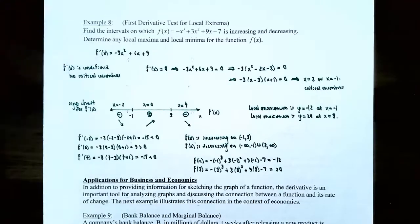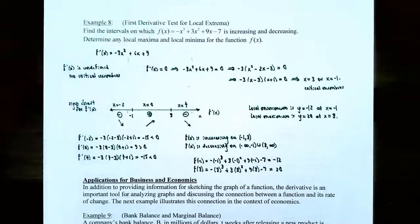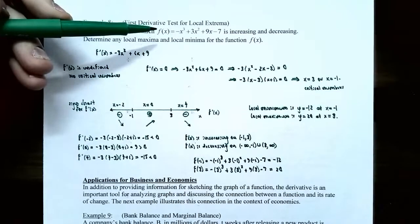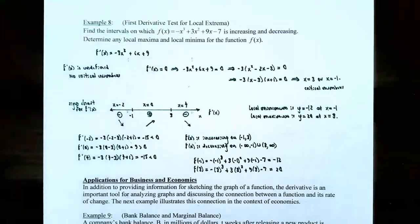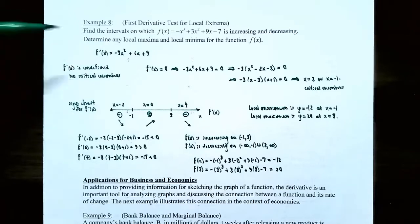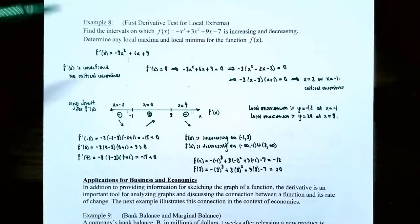Example 8: First derivative test for local extrema. Find the intervals on which f(x) = −x³ + 3x² + 9x − 7 is increasing and decreasing, then determine any local maxima or minima. Finding the derivative: f'(x) = −3x² + 6x + 9. Since the derivative is a polynomial, f'(x) is never undefined, so there are no critical numbers from that condition so far.